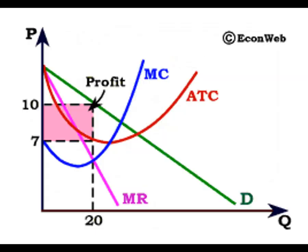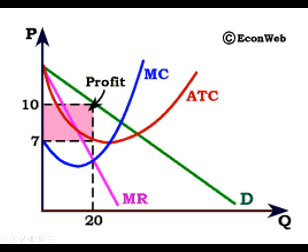So this is a firm making a profit. The steps to doing all this is we're going to find where marginal cost equals marginal revenue, which is called profit maximization. In this case, it happens at 20.